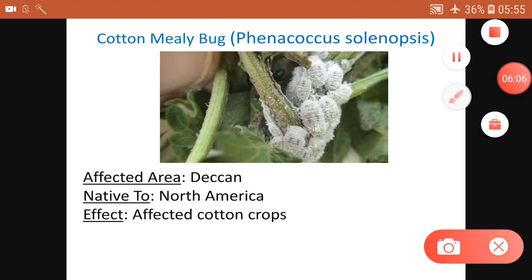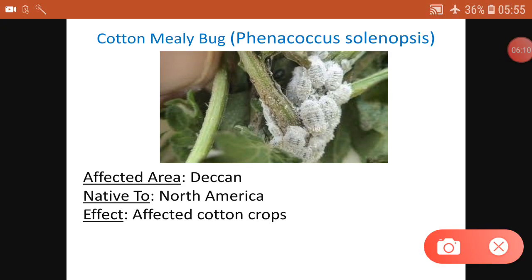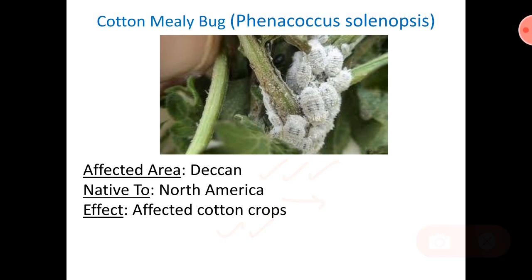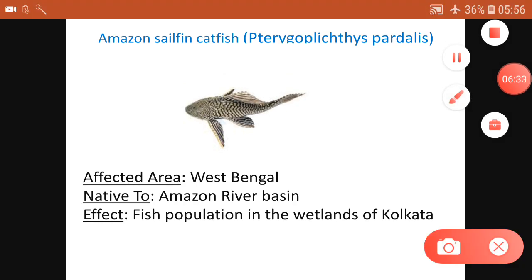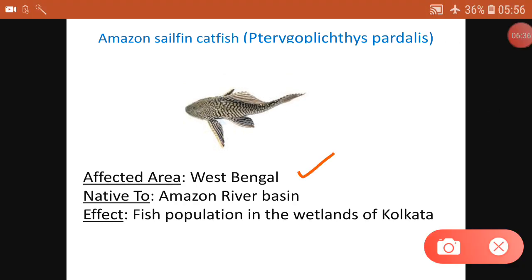There is also the Cotton Mealy Bug, Phenacoccus solenopsis, which affected the Deccan plateau. It is native to North America and affects cotton crops. The Amazon Sailfin Catfish affected West Bengal — it is native to the Amazon River, as the name itself says. It affected the fish population in the wetlands of Kolkata.